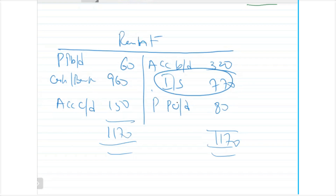For expenses: prepayments, accruals, accruals, prepayments. For revenues: accrued income, pre-received income, pre-received income, accrued income. Thank you very much.